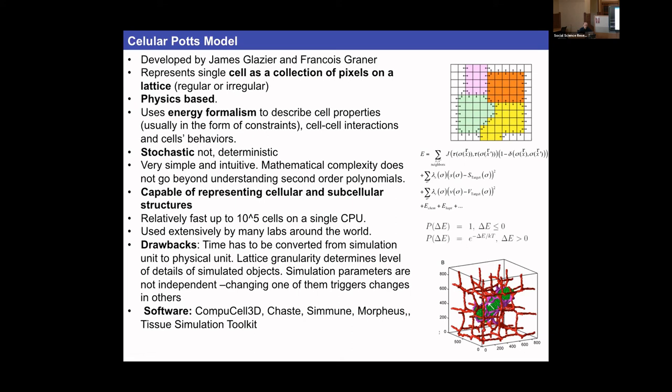James Osborne and David Gavaghan are key players in Chaste. SimeoN is another offshoot that targets modeling single cells. The Tissue Simulation Toolkit is written by Roland Merks, a close friend and collaborator, and many of its features are in CompuCell.